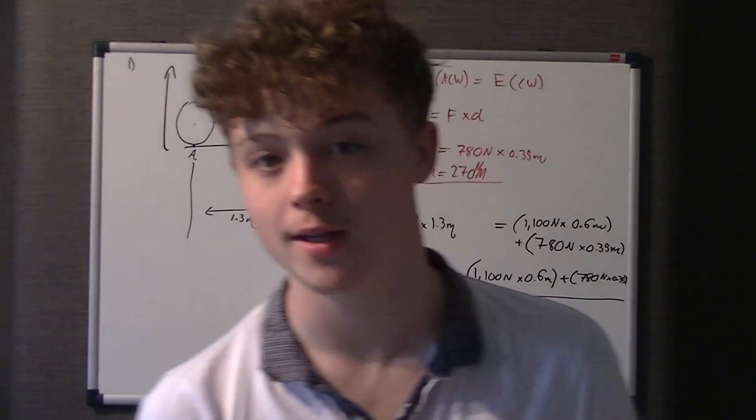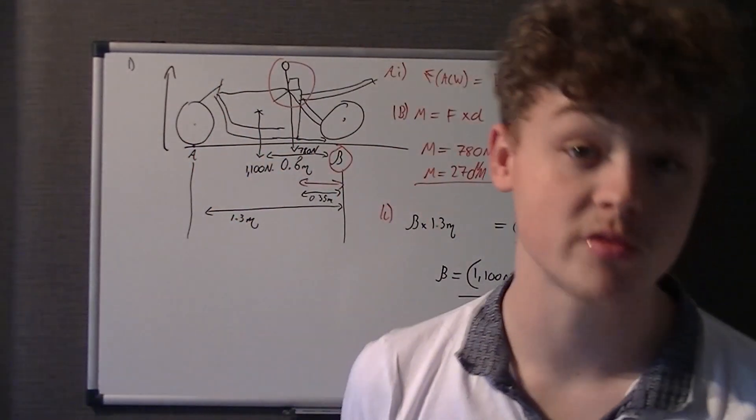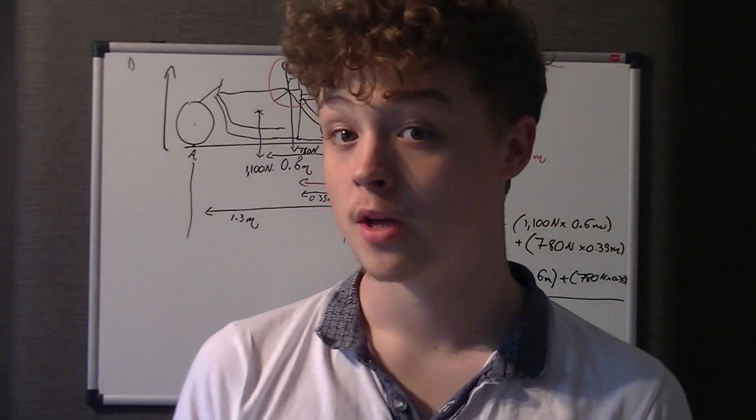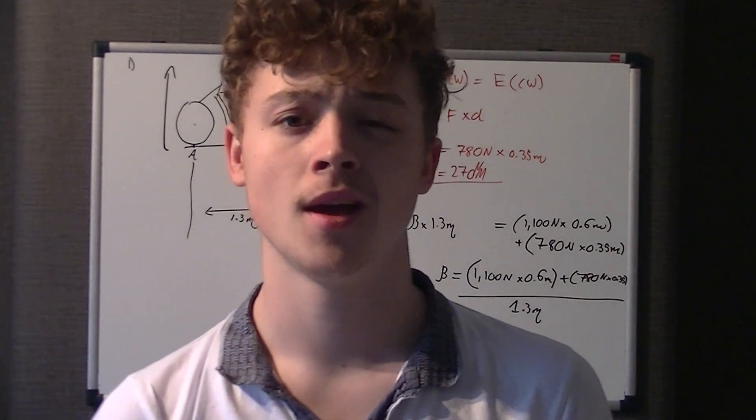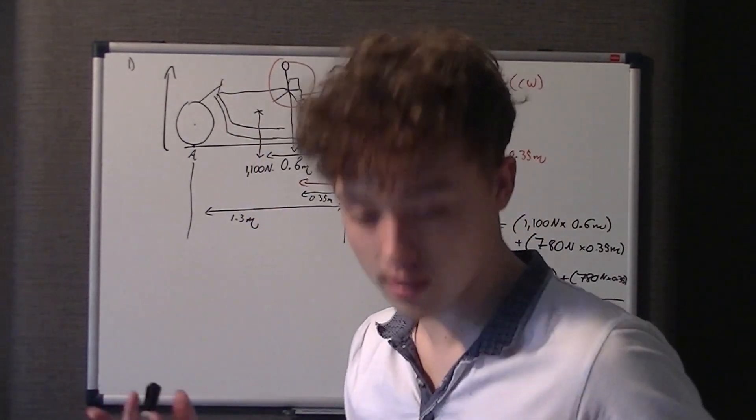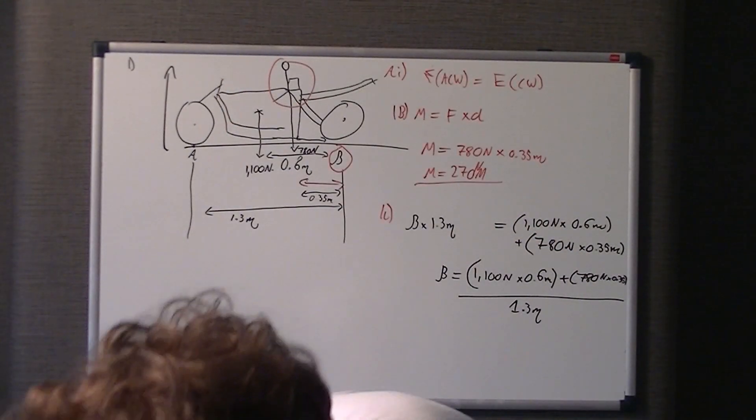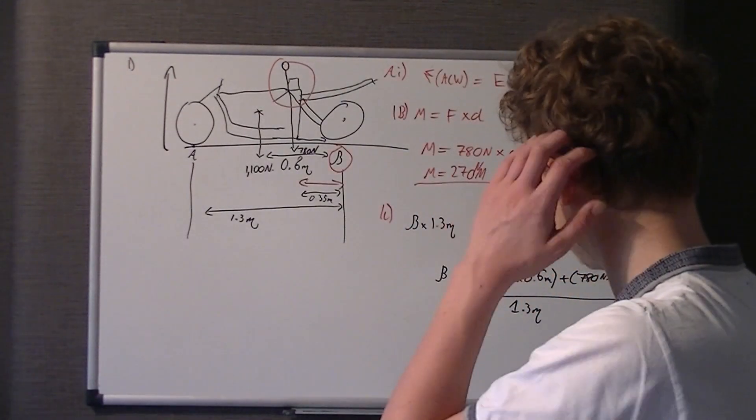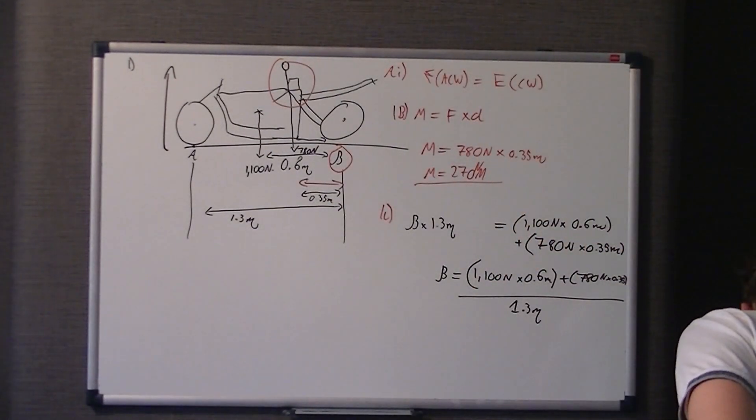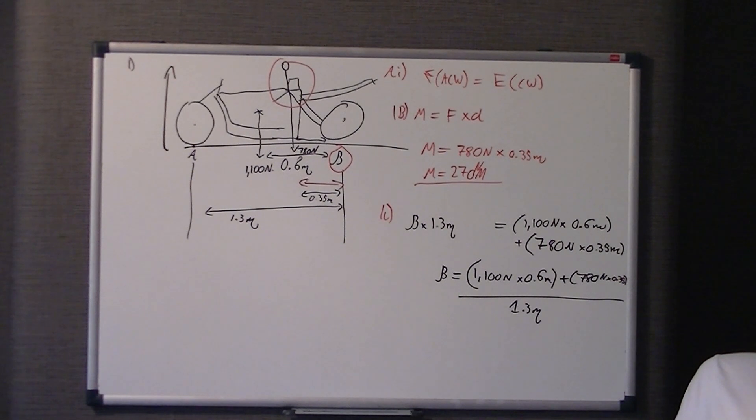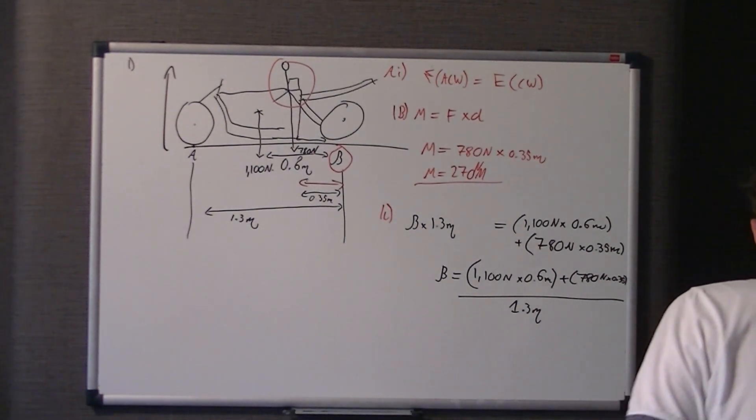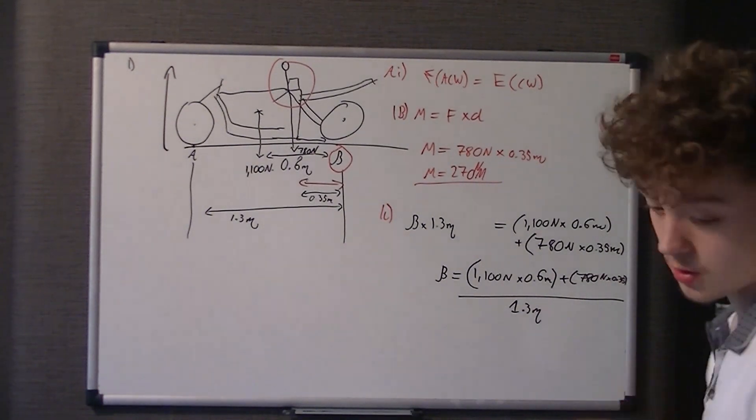I'm not going to do any calculations. Just so you can see where I'm getting the values from. Plus 780 newtons times 0.35. And that's all over 1.3 metres. Now, if you don't get why we've done that, you can look at the moments video which highlights a June 2014 exam question. And we go through it. It's a good idea. So, let me make sure what B comes to.